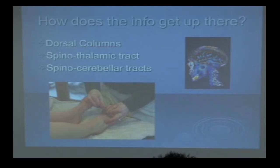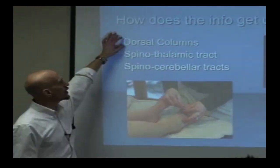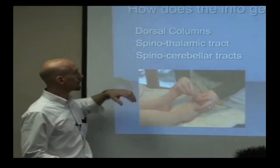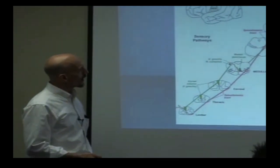How does the information get up there? How do we get the information from these joint and muscle mechanoreceptors, which incidentally we can affect with acupuncture needles, up to the brain? We've got a couple different pathways: the dorsal columns, the spinothalamic tract for pain, and the spinocerebellar tracts for more proprioceptive type of information.